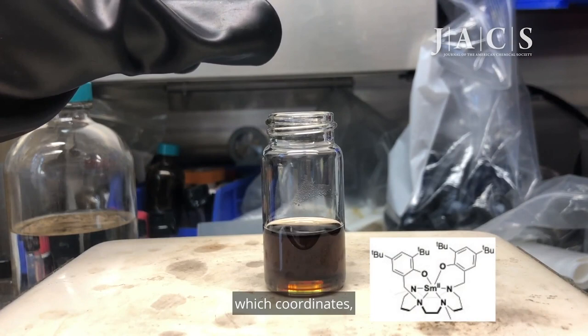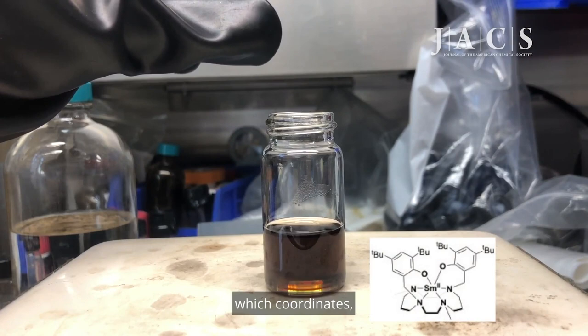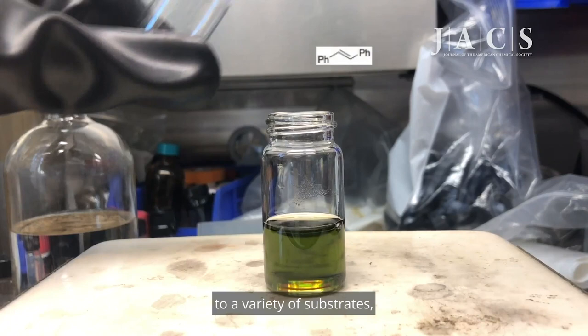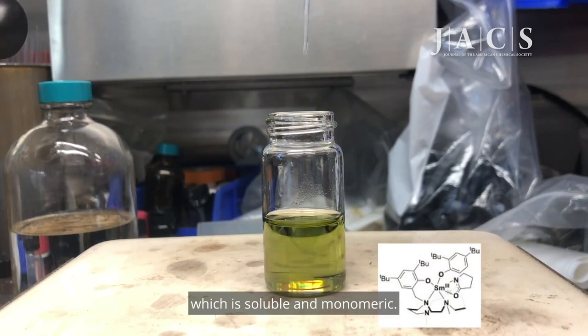Indeed you can make this Samarium-2 complex, which coordinates, here we're using this pyrrolidone as a protic ligand, and it activates this NH bond to transfer hydrogen atom equivalents to a variety of substrates, and ultimately make this Samarium-3 pyrrolidonate complex, which is soluble and monomeric.